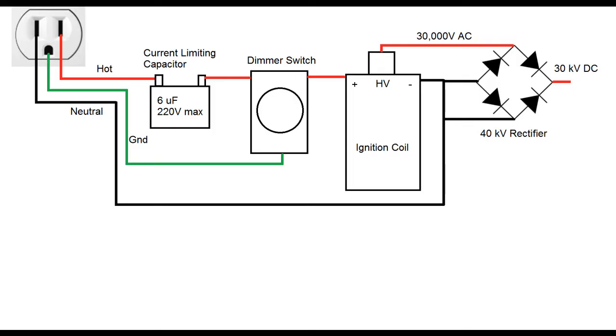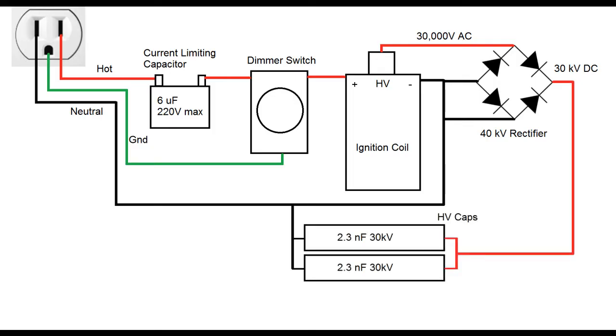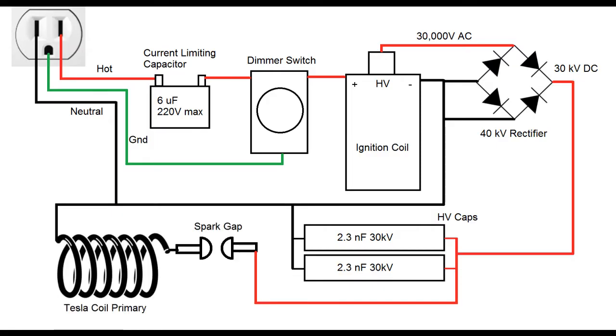For the Tesla coil, the high voltage DC is fed into a pair of capacitors that I rolled by hand from aluminum foil and polyethylene film. Once the caps charge to high enough voltage, they discharge through the spark gap, and the current pulse travels through the primary side of the Tesla coil.